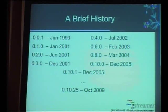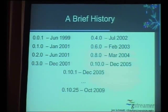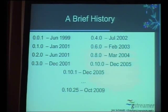Here's a brief history. GStreamer has been going since 1999—it was 10 years old in June of last year. It's gone through a set of major release cycles: 0.1 in 1999, then 0.2, 0.4. Version 0.6 was about the time it was added into GNOME.